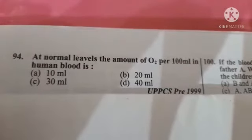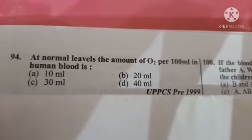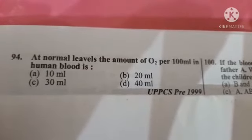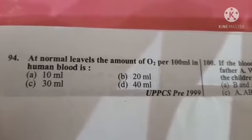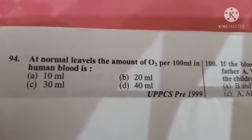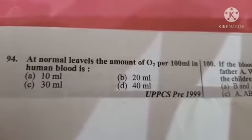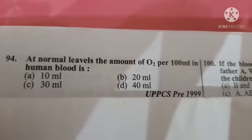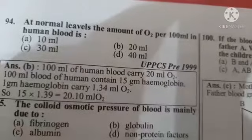Next question: at normal levels, the amount of oxygen per 100 ml in human blood is — Option A: 10 ml, Option B: 20 ml, Option C: 30 ml, Option D: 40 ml. The correct answer is Option B: 20 ml.